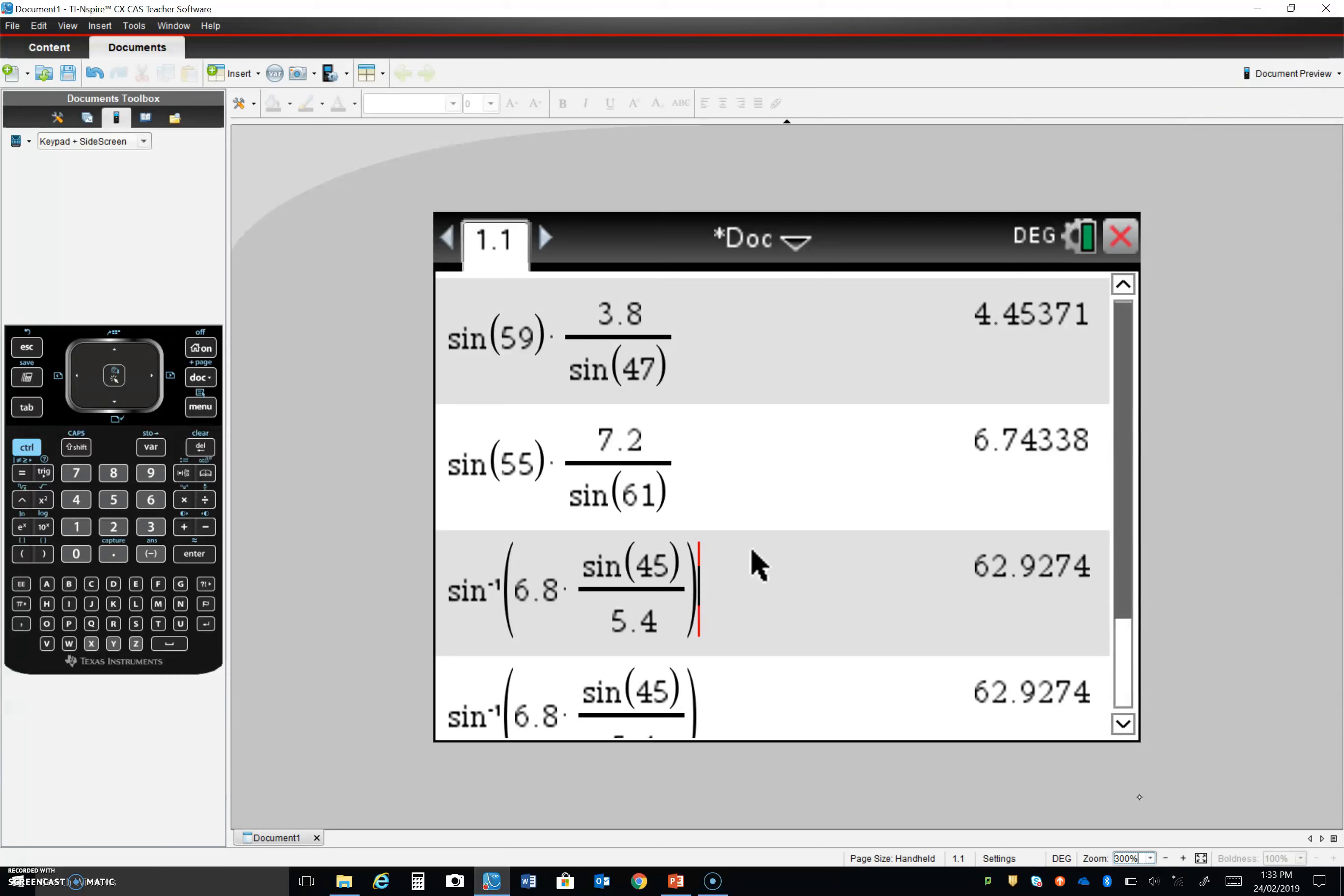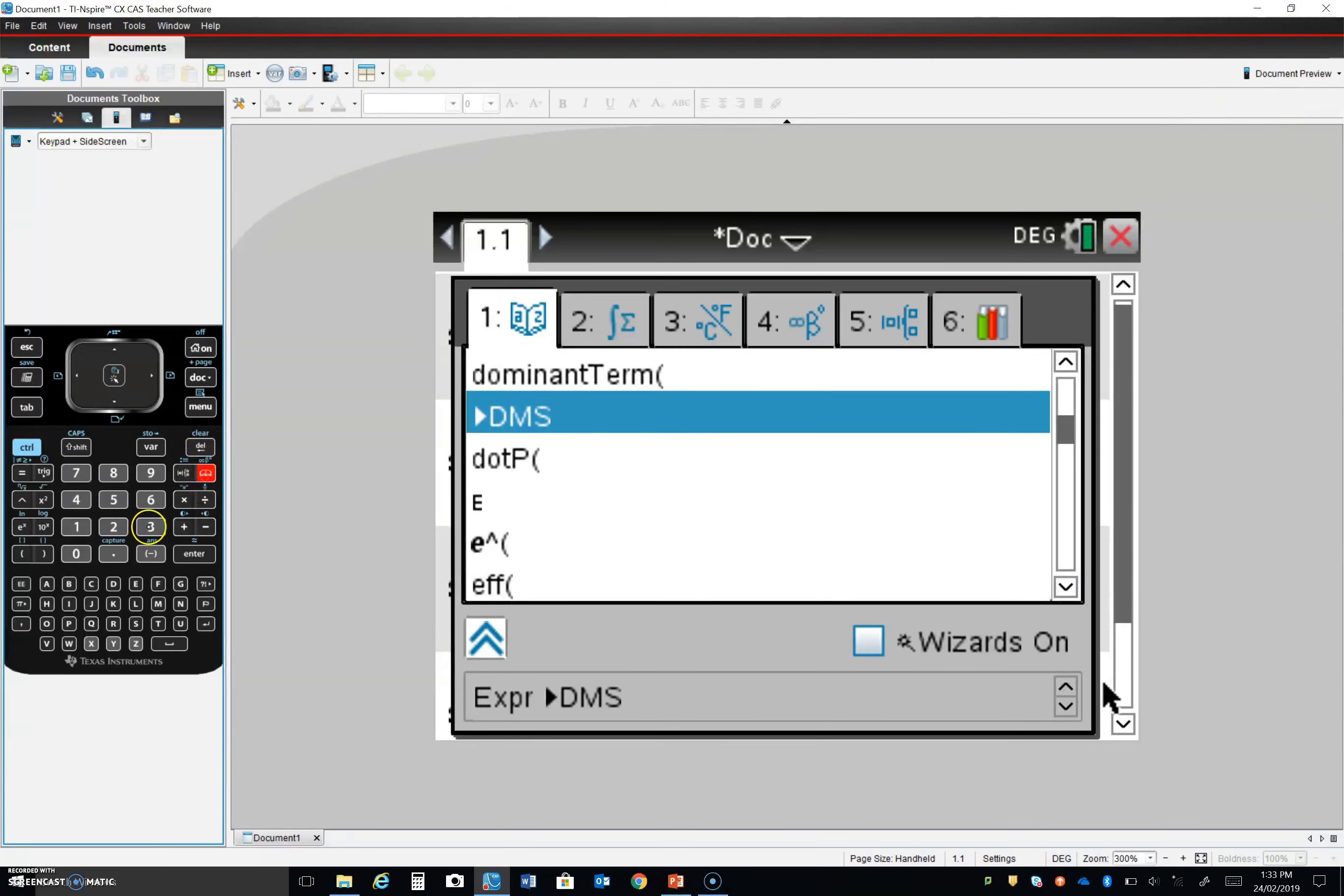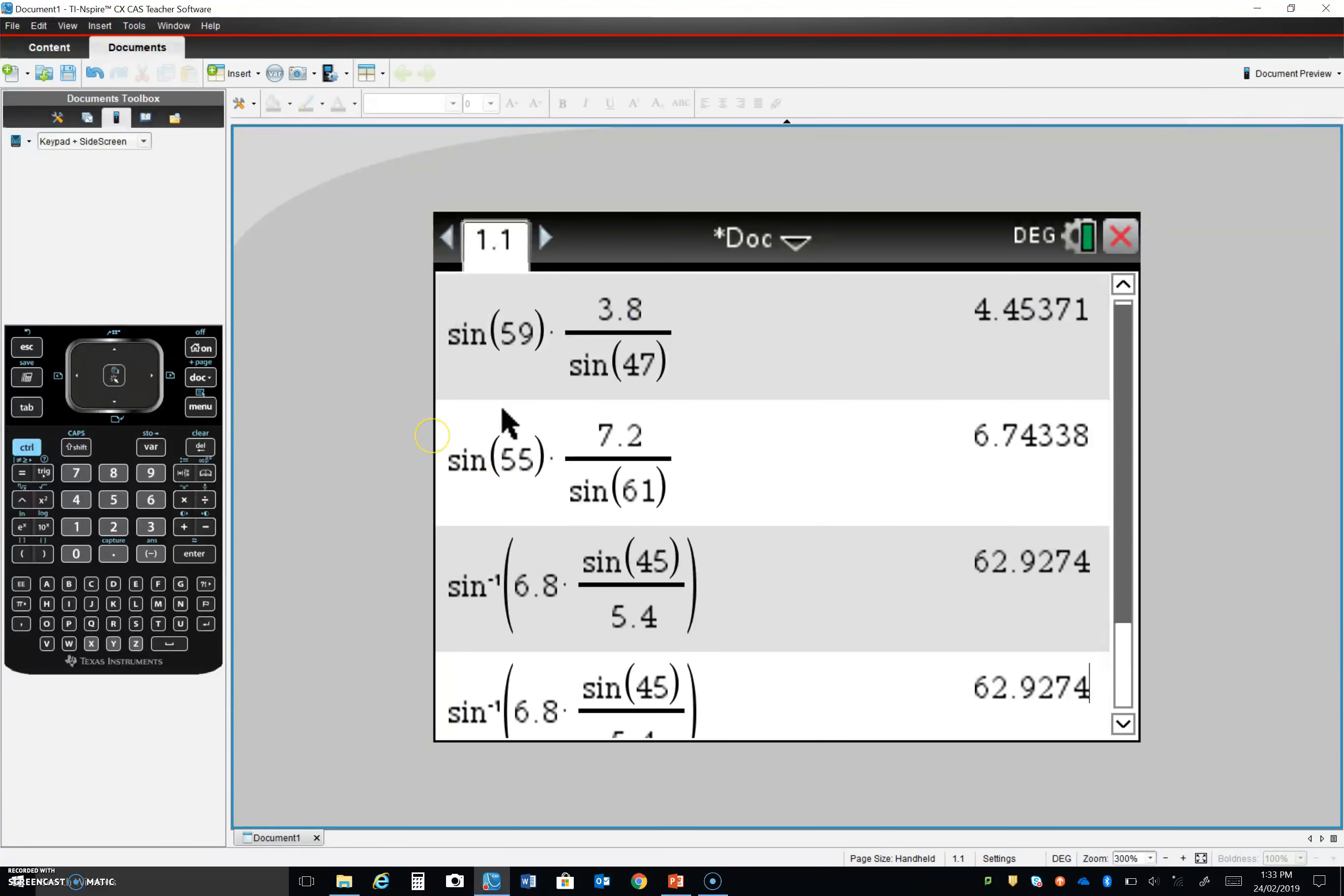And this last one, we're getting 62.9274. Of course, that needs to be converted to DMS. So, we'll do that immediately. I think we will anyway. Let's see. I might just need to push enter here.